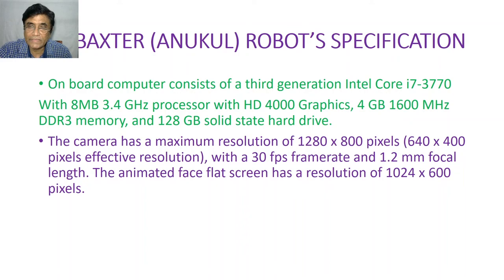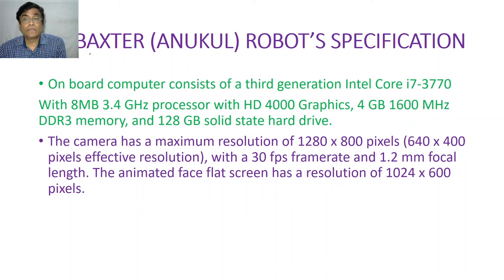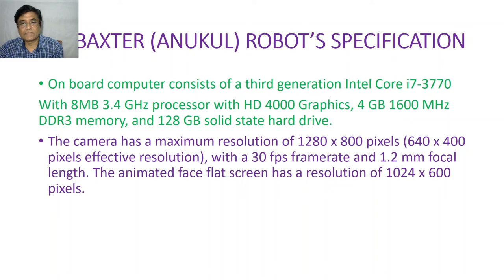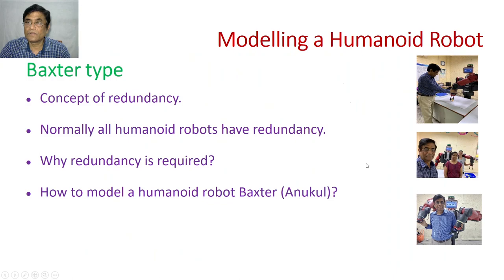These computational specifications are the minimum required for solving trajectory planning, inverse kinematics, and related problems. For vision-based Baxter research, you may require a more powerful computer — for example, a GPU server for object detection and recognition can be connected to the Baxter. It also has two in-built cameras with 1280 x 800 pixel resolution, effective resolution of 640 x 400 pixels at 30 frames per second, and 1.2 millimeter focal length. The animated face flat screen has a resolution of 1024 x 600 pixels.